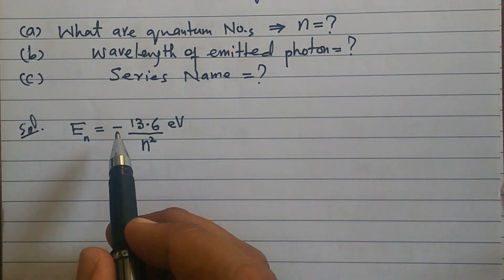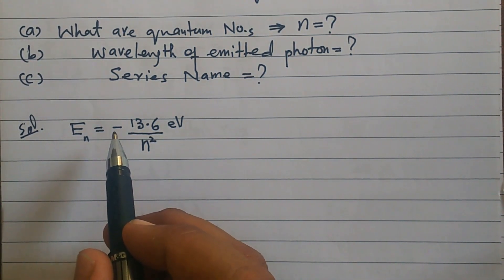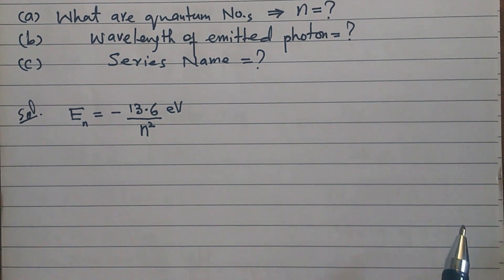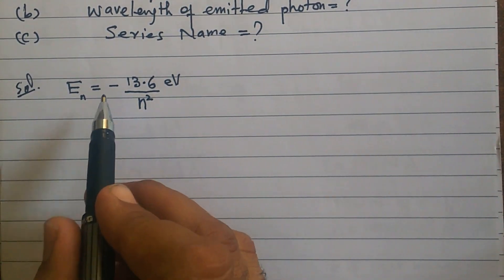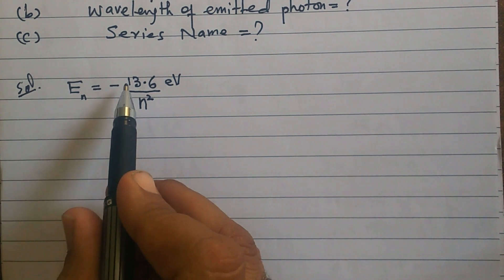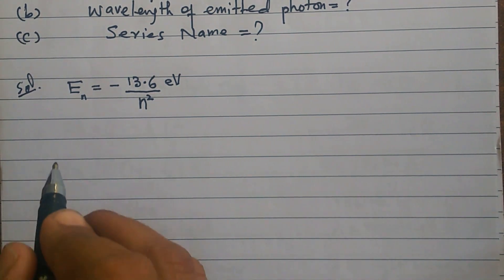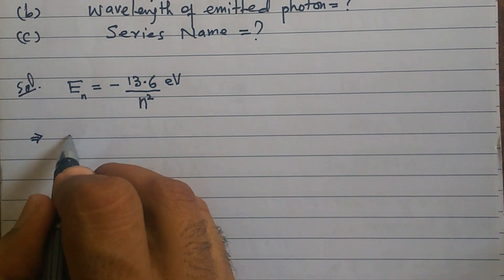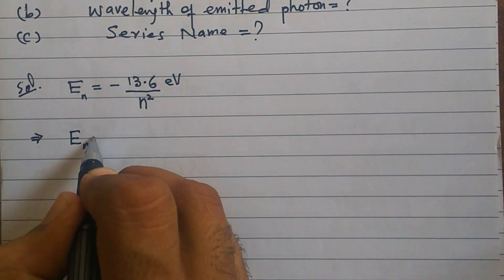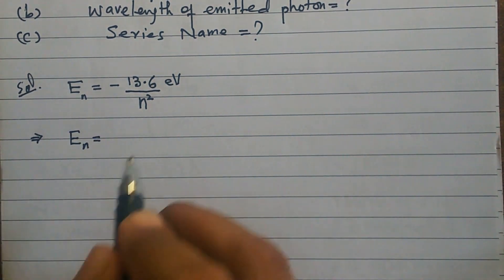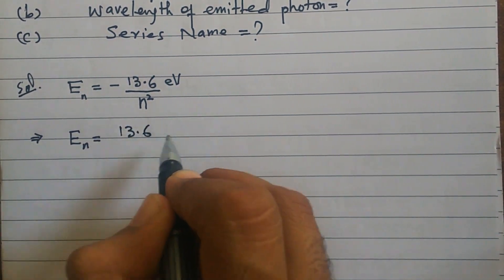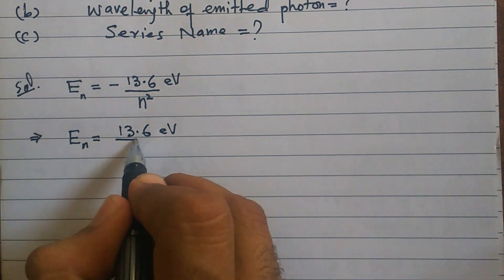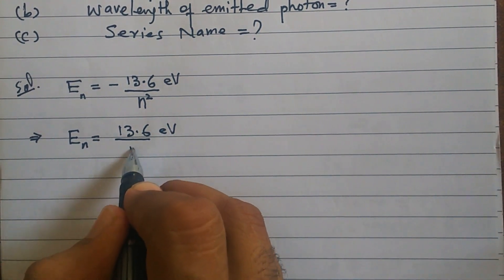This energy is the binding energy. In a numerical, we do not need to keep the minus sign — the electron is bound to the atom so the sign is negative, but if we talk about magnitude, we use the formula: energy in any state equals 13.6 electron volts divided by n squared.